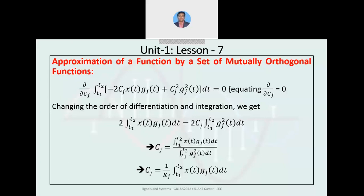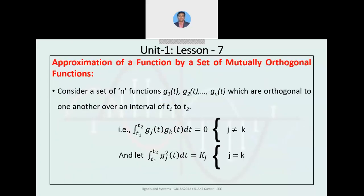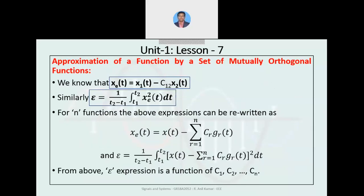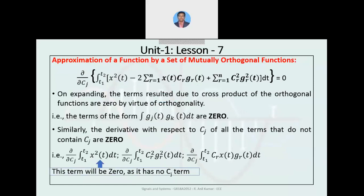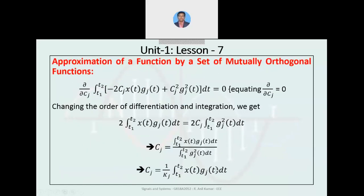As already discussed, the integral from t1 to t2 of g_j²(t) dt is defined as k_j. From the orthogonality condition, when j equals k, the integral of g_j²(t) dt equals k_j. So we substitute that term here: g_j²(t) dt is replaced by k_j, giving the final expression for C_j.